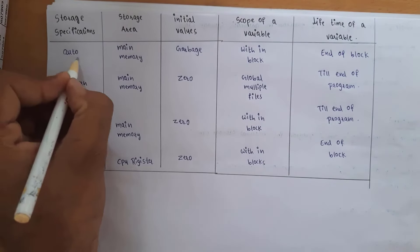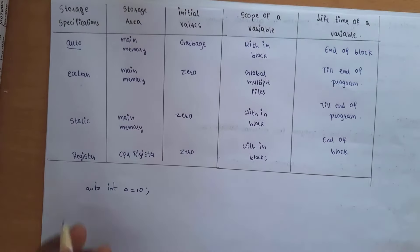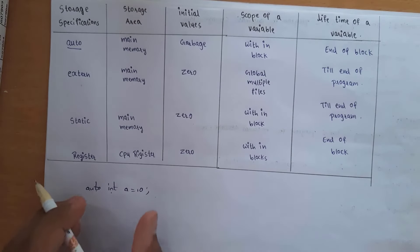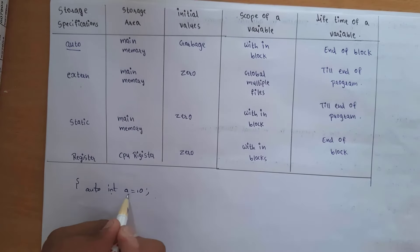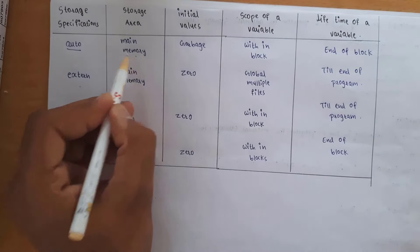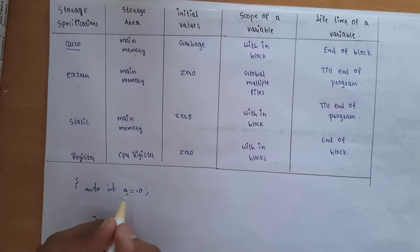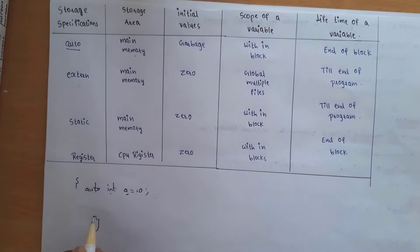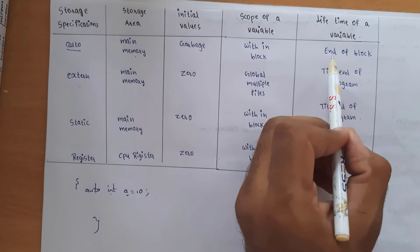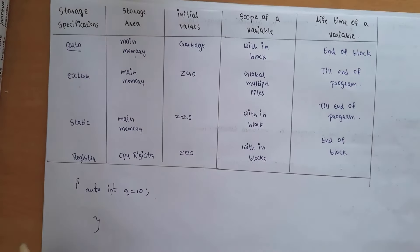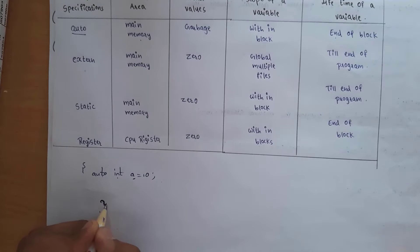You need to remember this table. For auto: if you declare auto int a equal to 10, the variable a is stored in main memory. Its scope is within the block — you can access this variable only within the block, not outside it. The lifetime of the variable is until the end of the block, meaning the variable expires when the block closes.